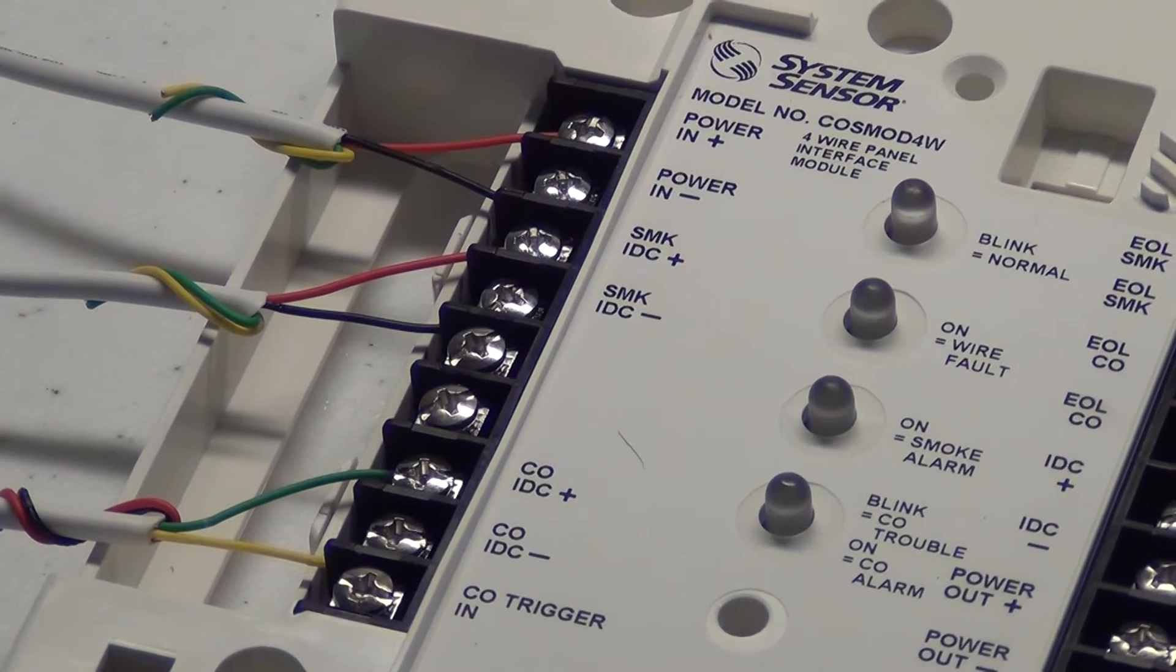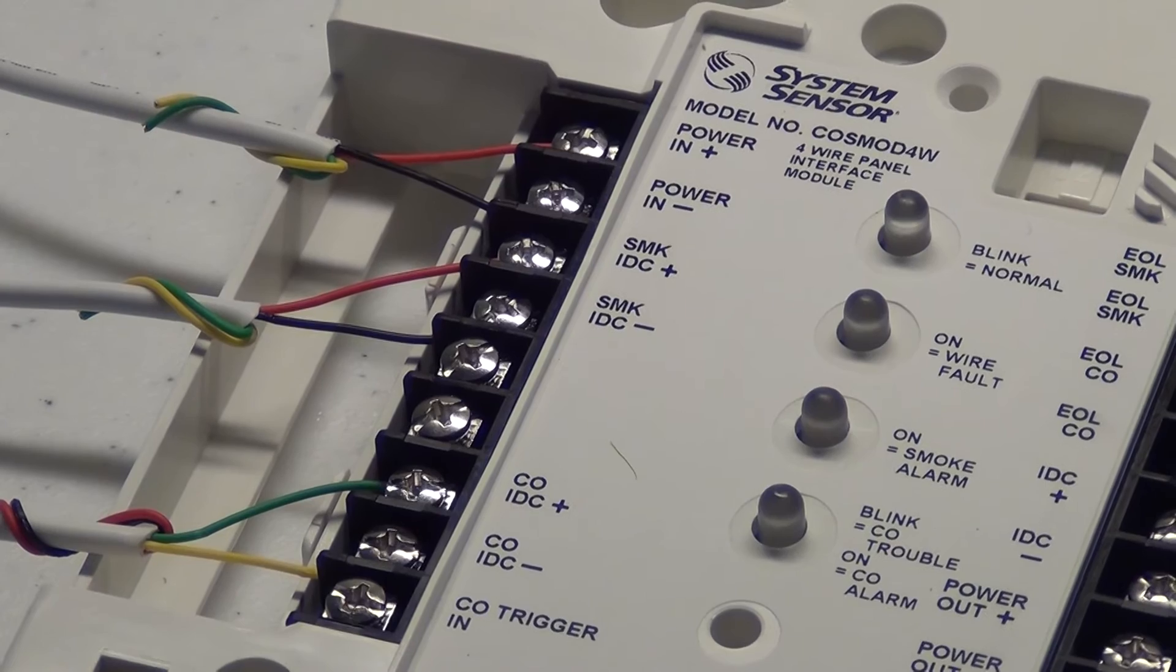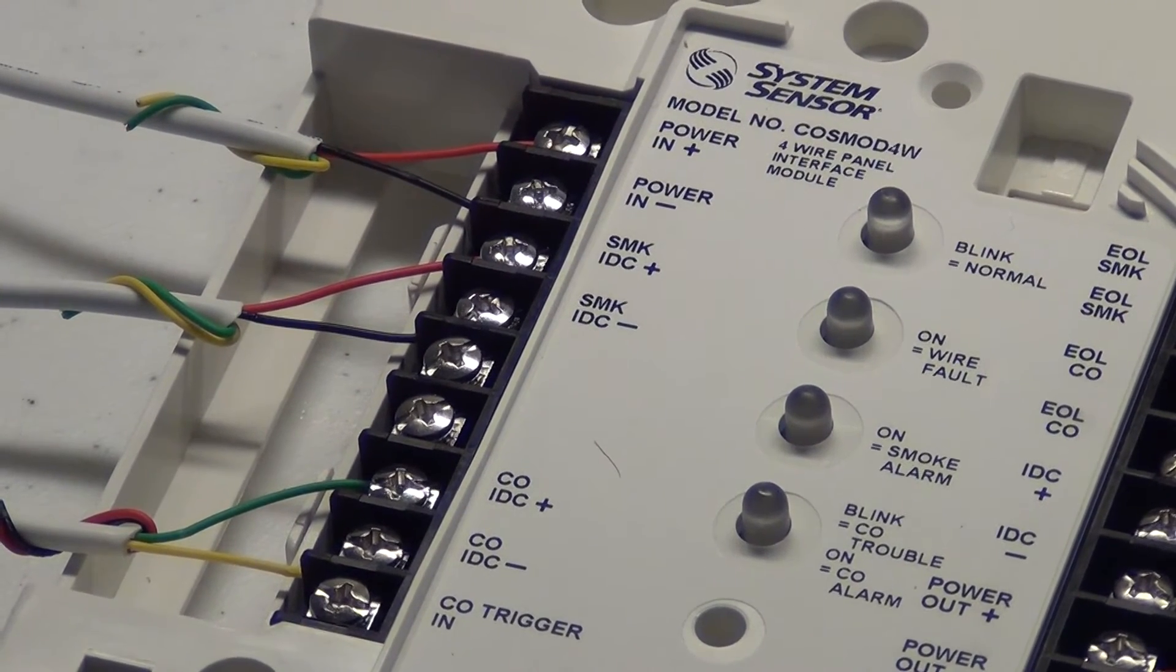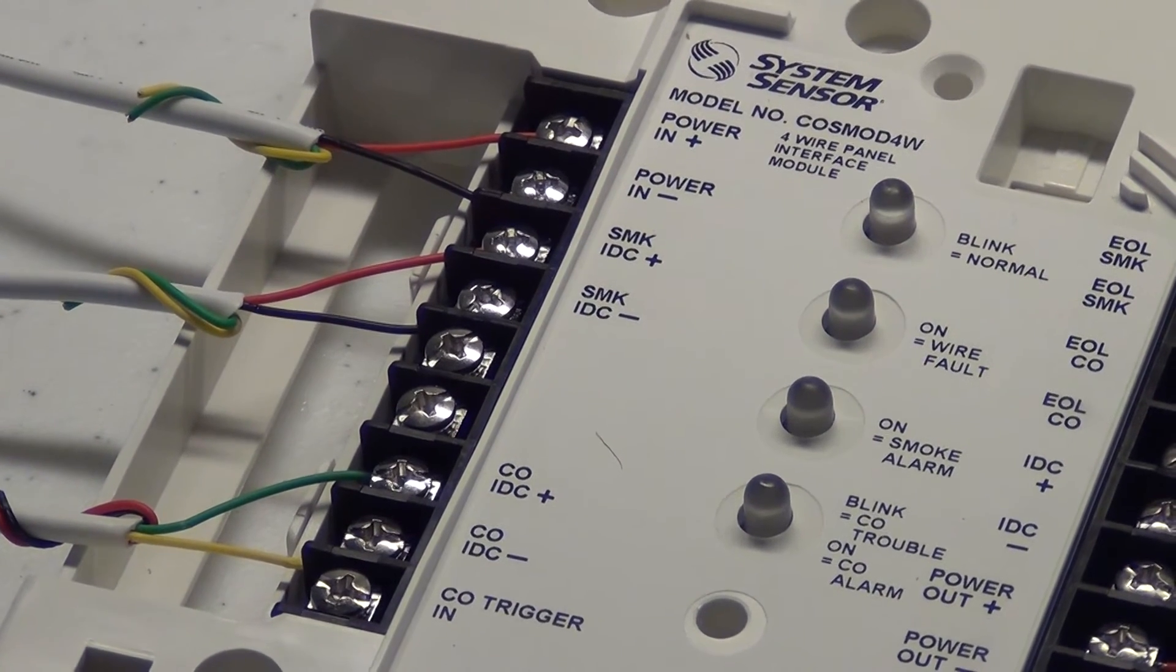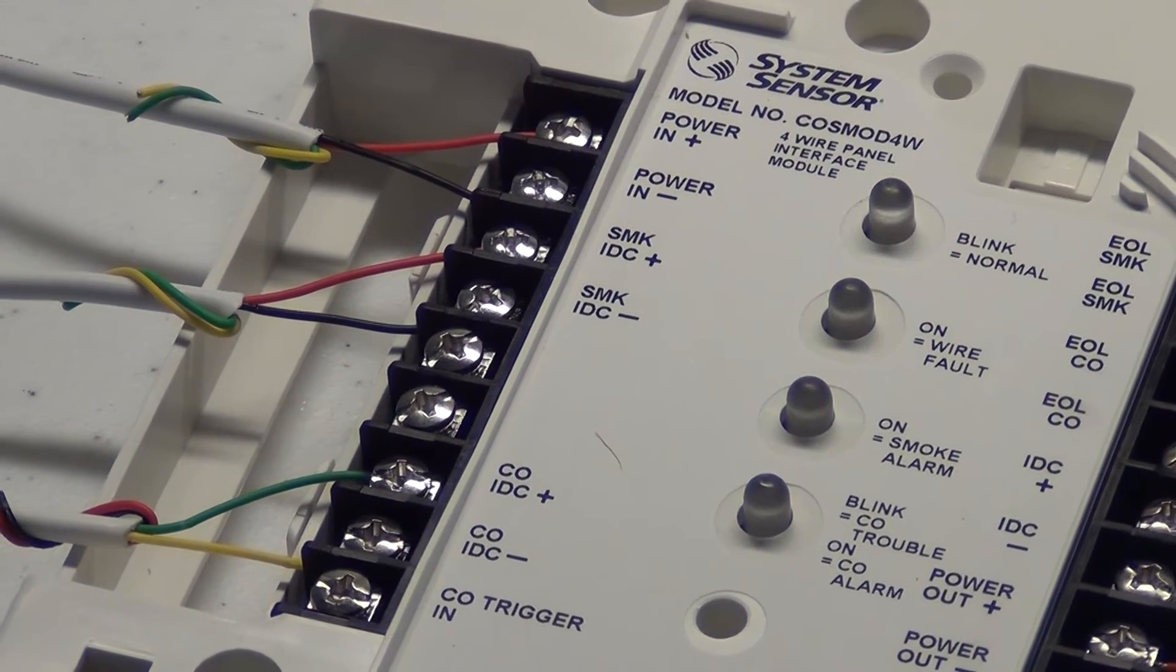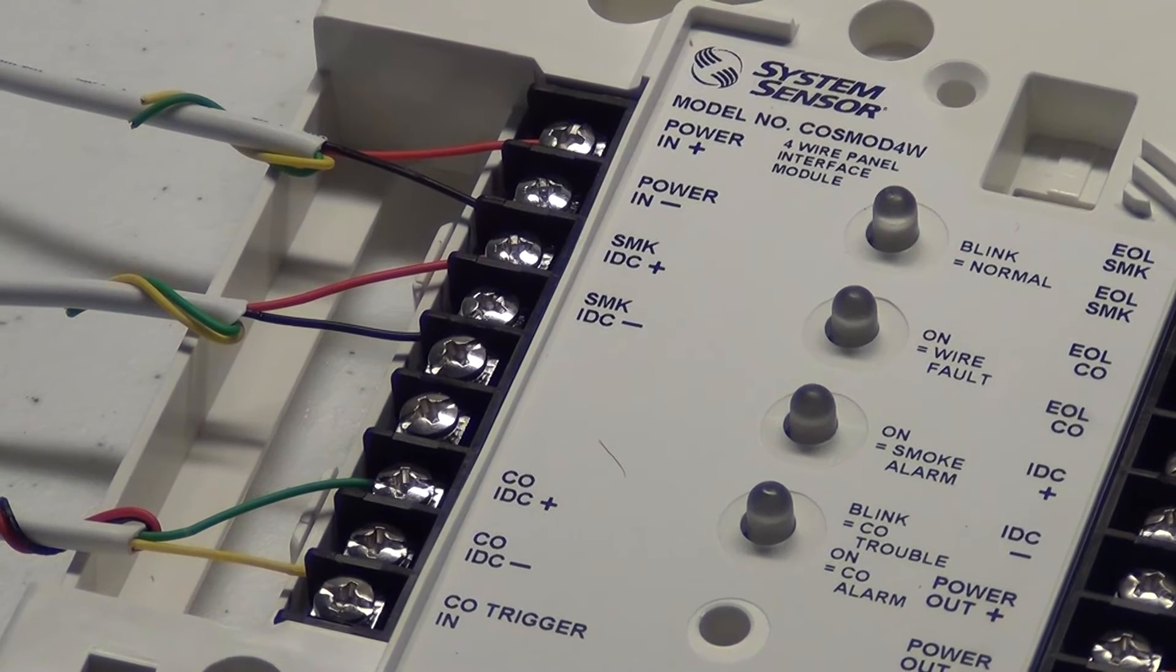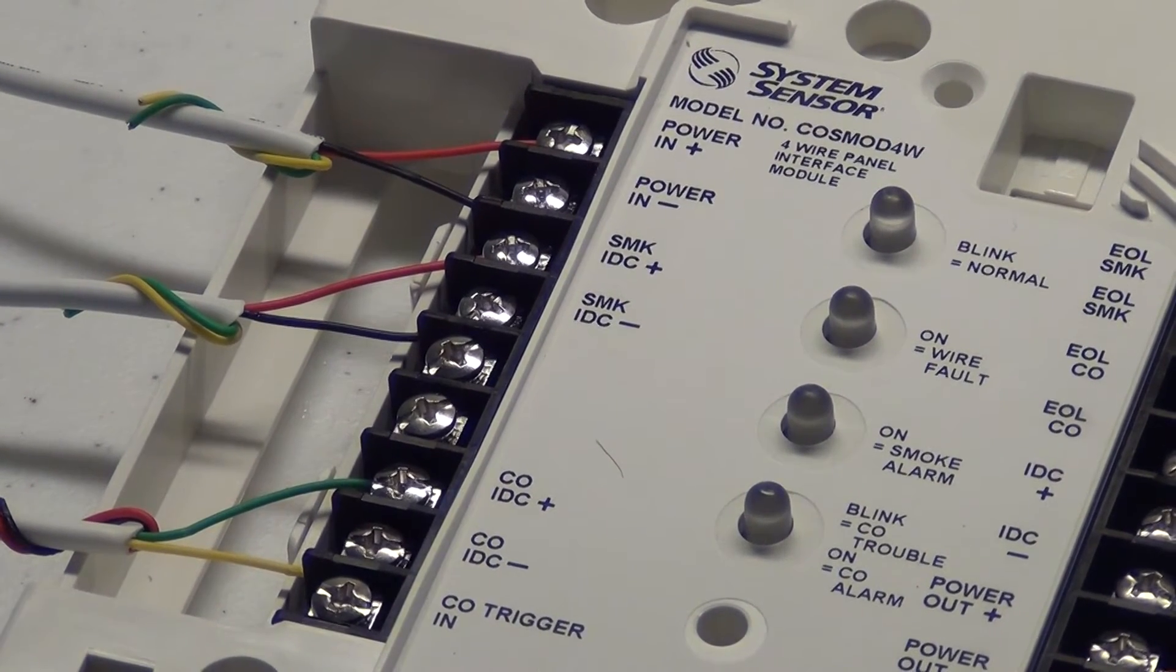Just remember that if you're using this on a Honeywell or a DSC you will have to connect the power wires to something on the board that is going to provide a reset for the smoke and the COs. On a DSC you will connect these into your PGM outputs on the board and do the programming for a smoke reset. This is a four wire hookup so you'll have to do programming for a four wire smoke reset.